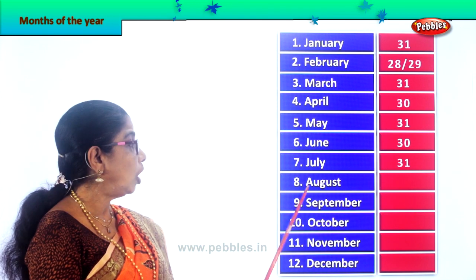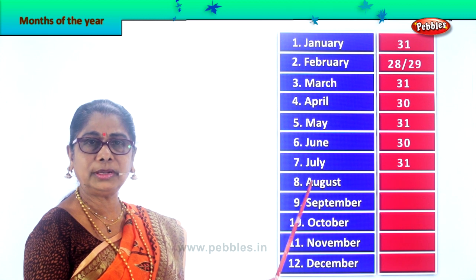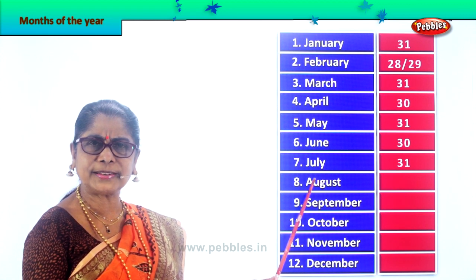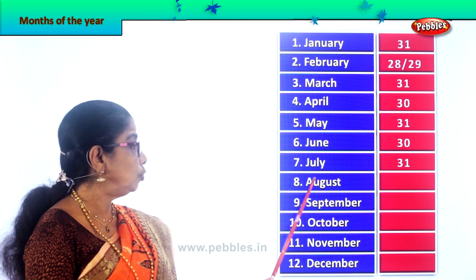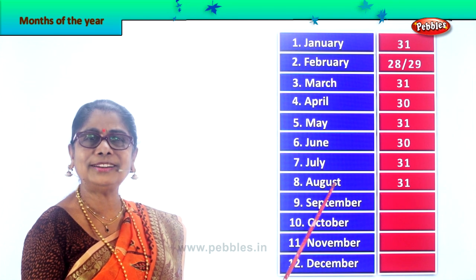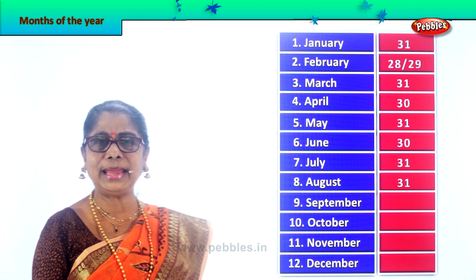Next, you have August — all Independence Day celebrations! Spell August — A-U-G-U-S-T, August. And August has how many days, children? 31 days. So we have August with 31 days.